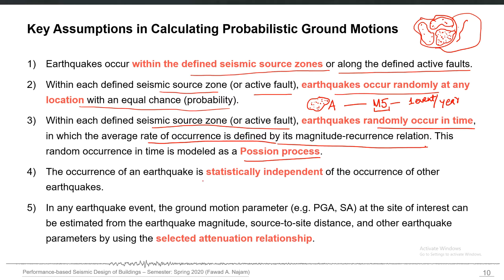We assume that earthquakes just randomly occur in time and don't follow any pattern. Another important assumption is that each earthquake is statistically independent of the occurrence of other earthquakes. If one earthquake occurs at a particular time, it will not cause or affect the occurrence of any other earthquake. Their occurrence is statistically independent — in other words, they don't have any memory.